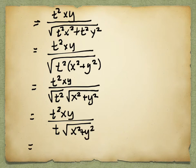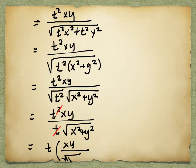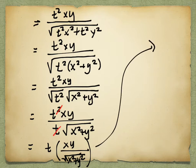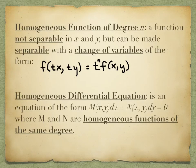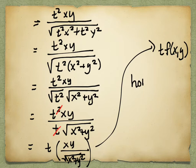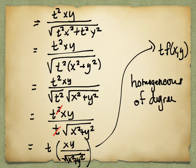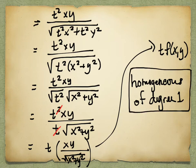What's in parentheses was exactly what we started with — the f(x,y) we began the problem with — which means we were able to turn it into the right-hand side of the equation with a t factored out. The exponent on that t is 1, so we found that since we were able to factor out t, it is homogeneous of degree 1.